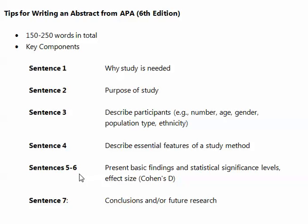The fifth and perhaps sixth sentence describes the basic findings and statistical significance levels, if applicable, and effect size, which we've referred to as Cohen's D. You're not presenting all your findings, just the ones that you think are the most important.